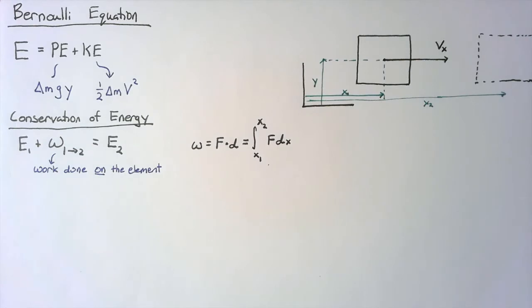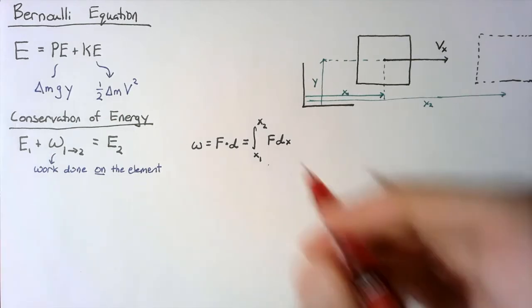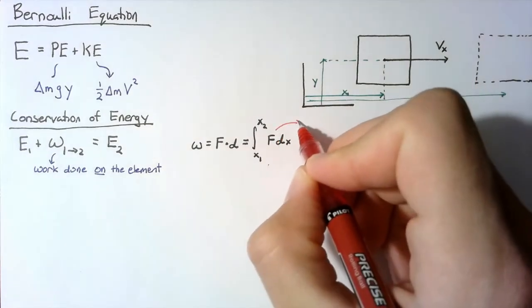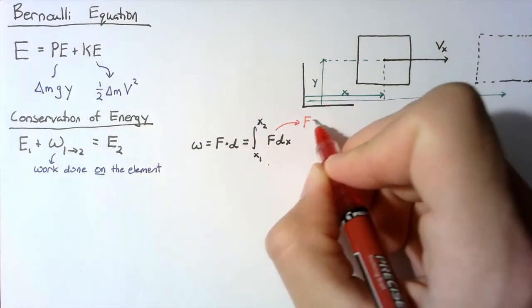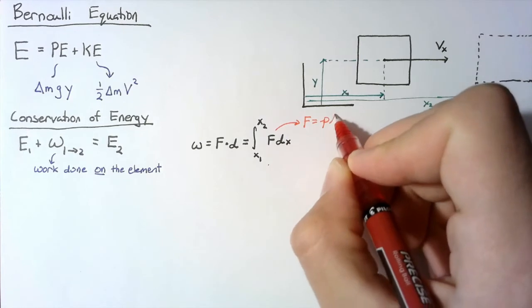So between these two points, the position is obviously changing, but the velocity and the height and the pressure could all be changing as well. Now let's talk a little bit about this force. Remember, the force is just going to be equal to the pressure times the area of whatever surface it's pressing against.